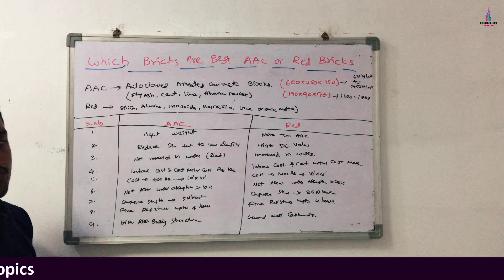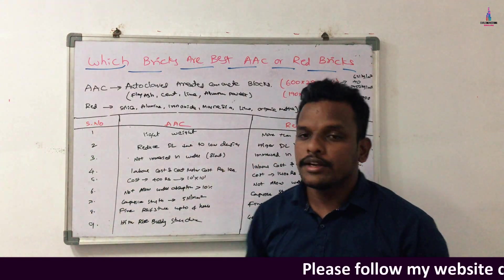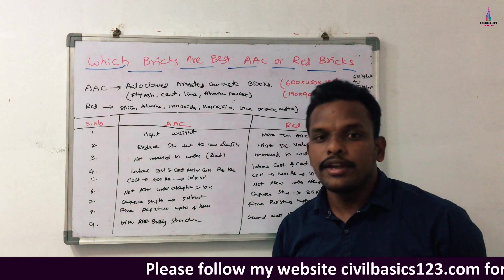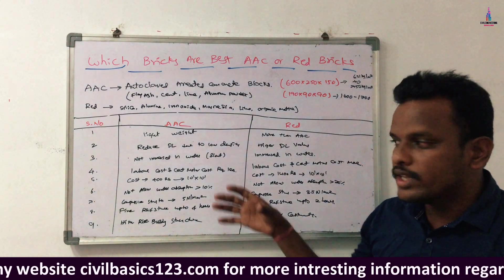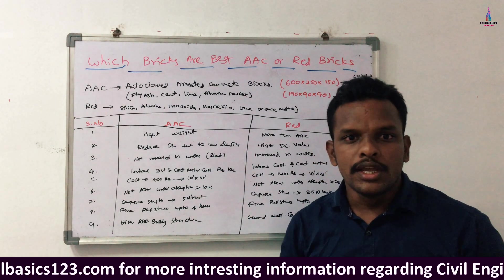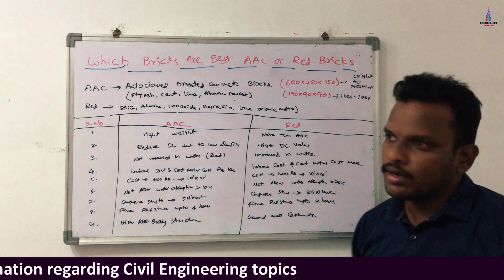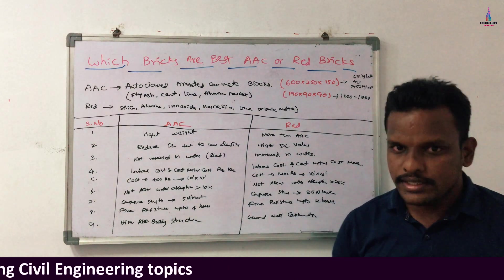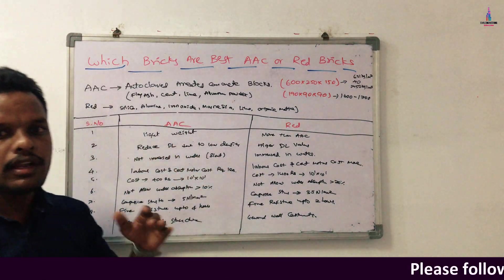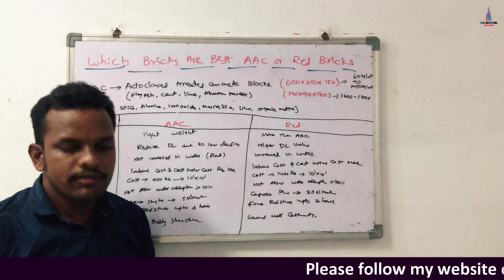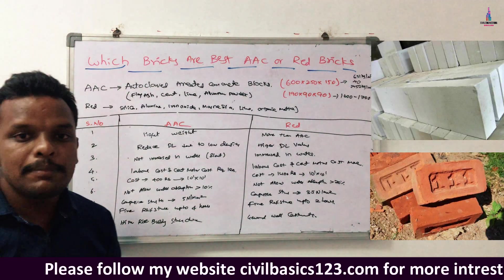The third point is that due to the low density and composition of its four materials, AAC blocks will not be immersed in water. If you place an AAC block on top of water, it will not sink — it will float. Red brick blocks, due to their high weight, will sink directly in water. This is a key advantage of AAC blocks.